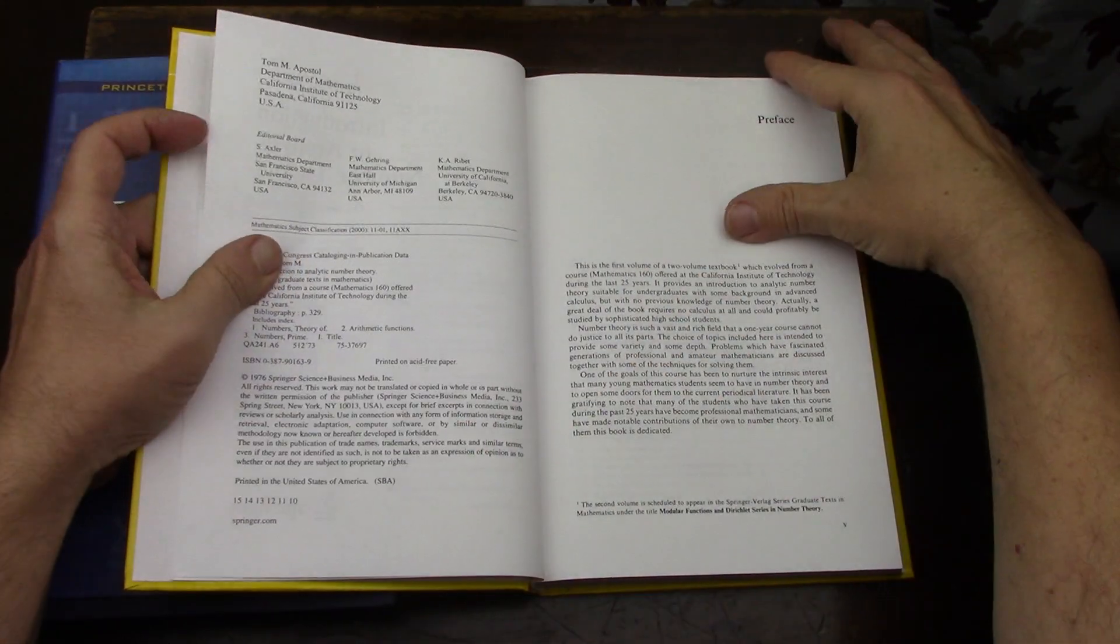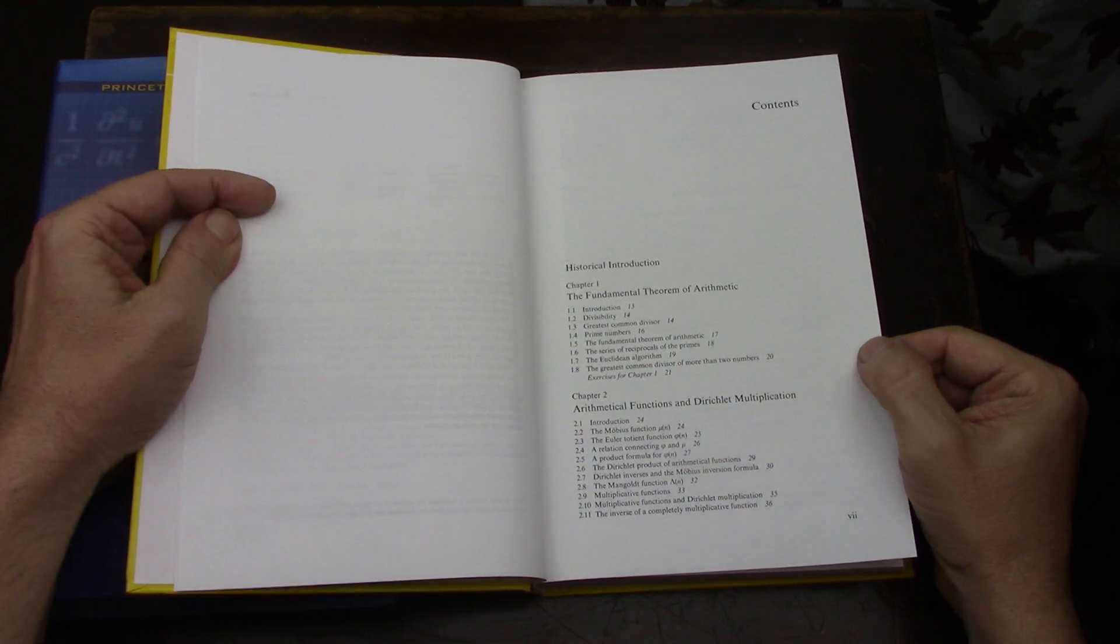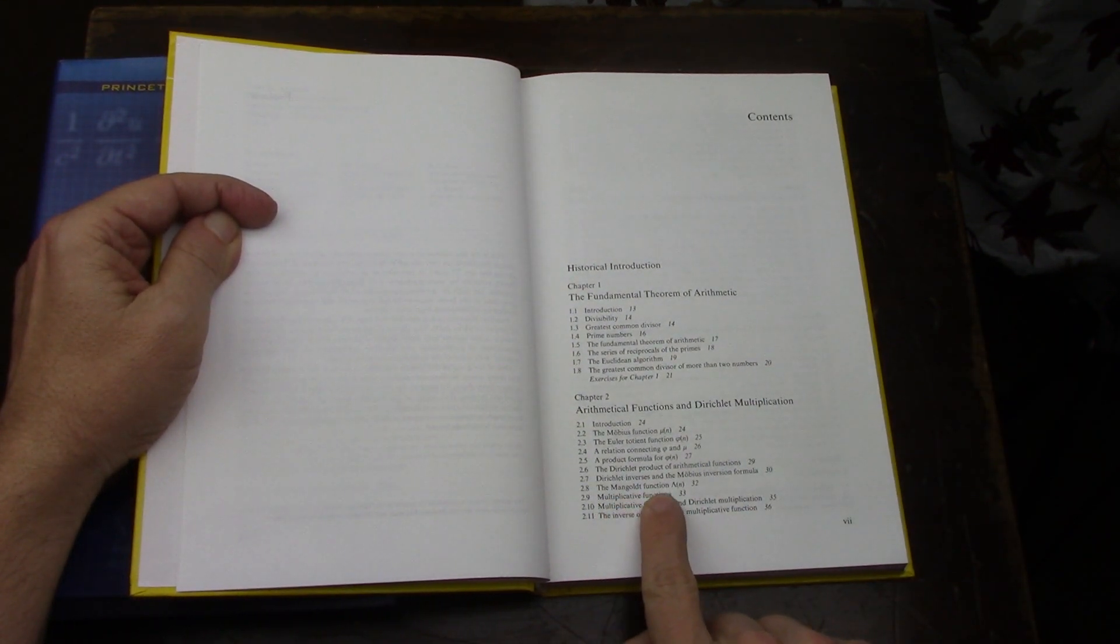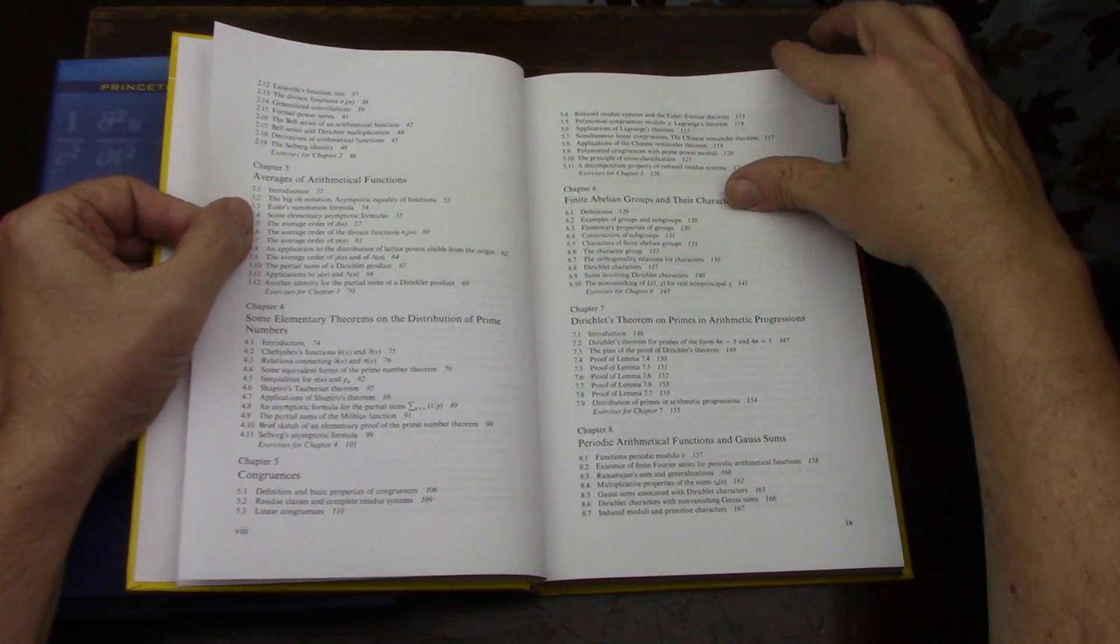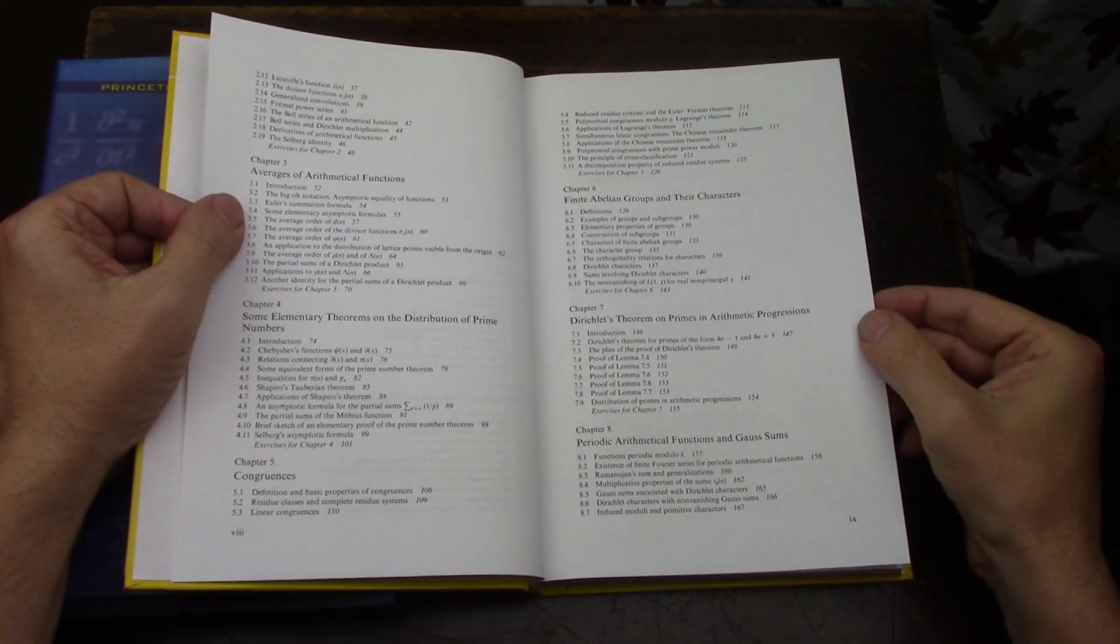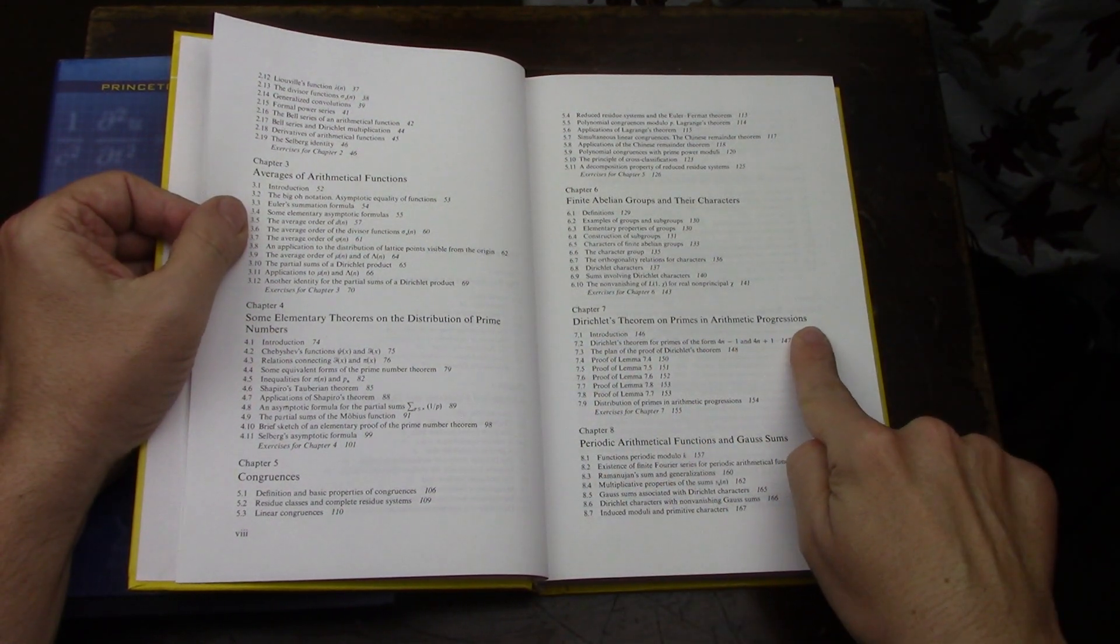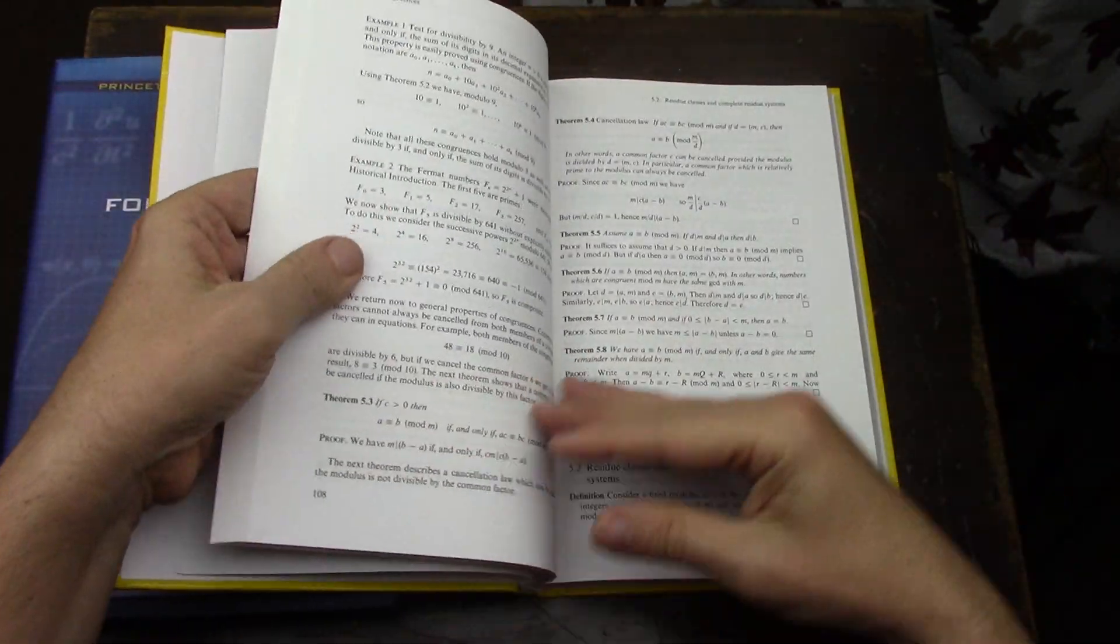And so I remember when I was trying to use it for number theory that there were some things that it would help me with like the Mangoldt function, I remember the Mangoldt function. But it's just hard, it's a hard book. And so of course there you have it, chapter seven, Dirichlet's theorem in arithmetic progressions, so that would be page 146.